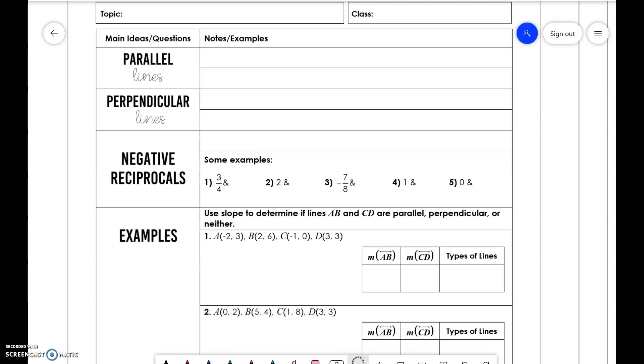We're going to talk about parallel and perpendicular lines today and how we can determine if two lines are parallel or perpendicular to each other. Parallel lines are lines that have the same slope.